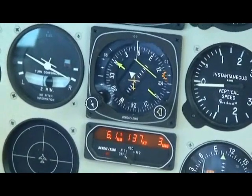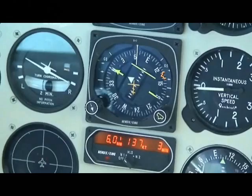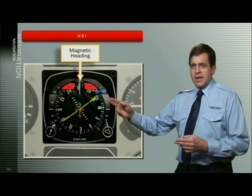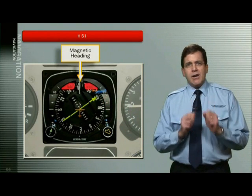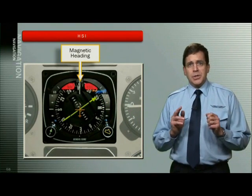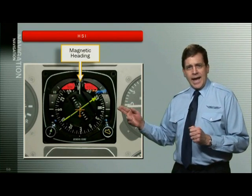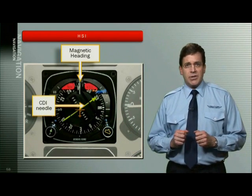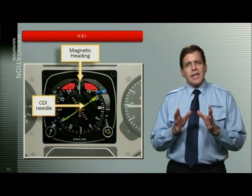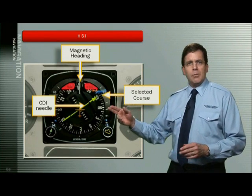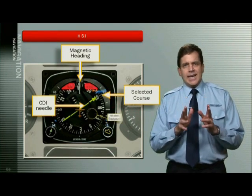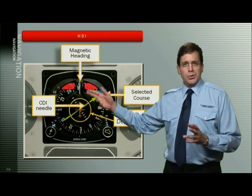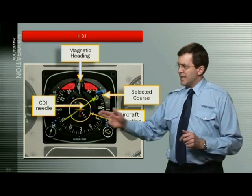Let's get into the heart of the HSI discussion. The HSI is actually two instruments in one: a heading indicator, as you can see from the compass rose display, and a VOR indicator, as you can see from the central needle with a head and tail pointer and a movable course deviation indicator in the center of the needle. The selected course is indicated by the yellow pointer. The heading indicator component shows magnetic heading at the top of the compass rose, and the aircraft depiction is in the center.